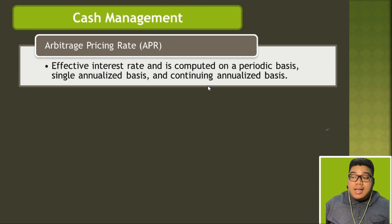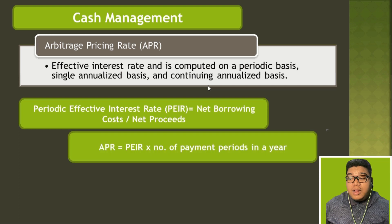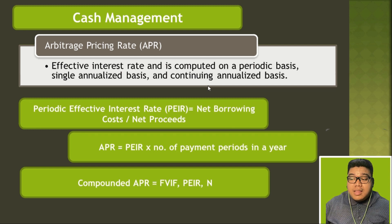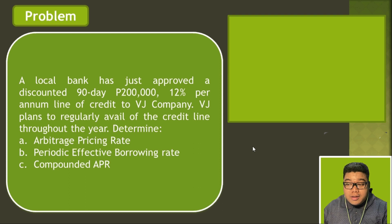The Arbitrage Pricing Rate (APR) is the effective interest rate computed on a periodic basis, a single annualized basis, and a continuing annualized basis. The periodic effective interest rate is net borrowing cost divided by proceeds. The annualized APR is the periodic effective interest rate multiplied by the number of payment periods in a year. Problem: A local bank approved a discounted 90-day, $200,000, 12% per annum line of credit to VJ Company. VJ plans to regularly avail of the credit line. Determine the arbitrage pricing rate.